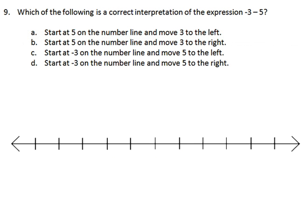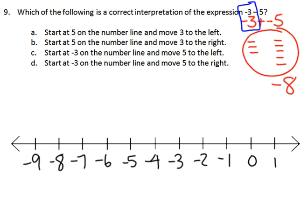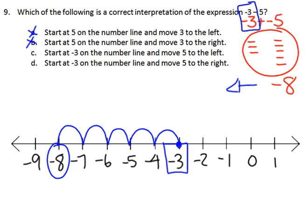Number 9: which of the following is a correct interpretation of negative 3 minus 5? We can rewrite it as negative 3 plus negative 5. Using integer chips, 3 negatives plus 5 negatives gives 8 negatives total. On the number line, we start at negative 3 and move 5 to the left, landing at negative 8. Choices A and B both say start at 5, so those cannot work. We moved left, which corresponds to choice C: start at negative 3 and move 5 to the left. So C is the correct answer.